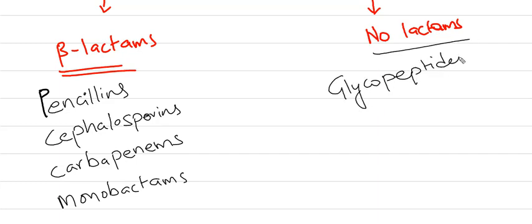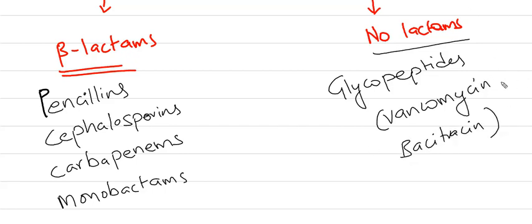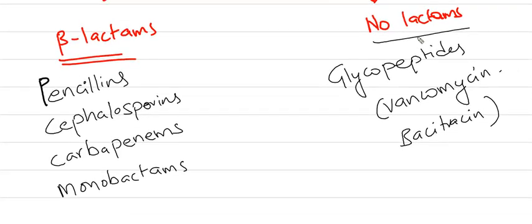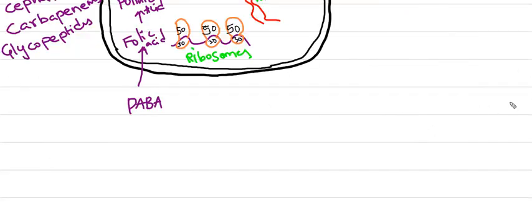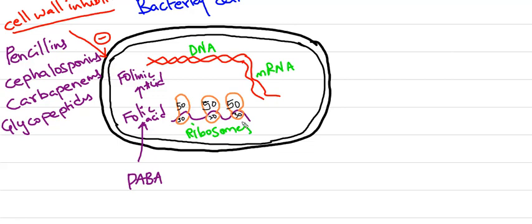Coming to non-lactams, these are glycopeptides, consisting of Vancomycin and Bacitracin. These are the cell wall inhibitors which do not have lactam rings.